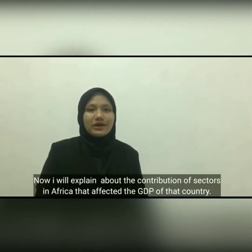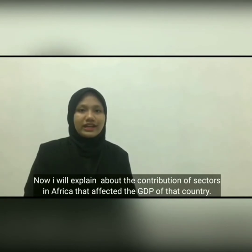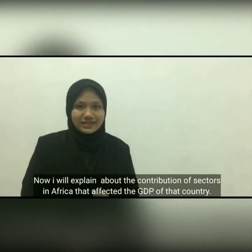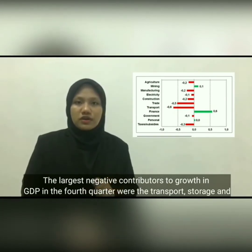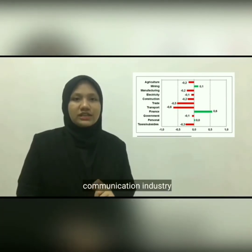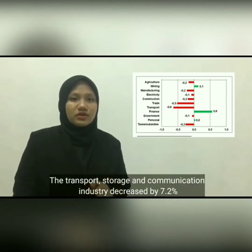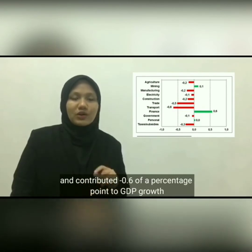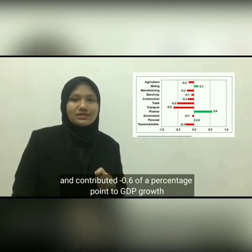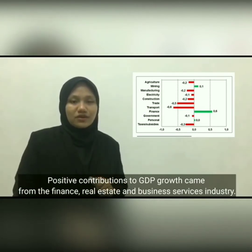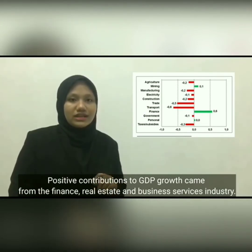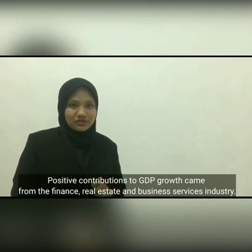Now I will explain about the contribution of sectors in South Africa that affected the GDP of that country. The largest negative contributors to growth in GDP in the fourth quarter were the transport, storage and communication industry. The transport, storage and communication industry decreased by 7.2% and contributed negative 0.6 of a percentage point to GDP growth. Positive contributions to GDP growth came from the finance, real estate and business services industry.